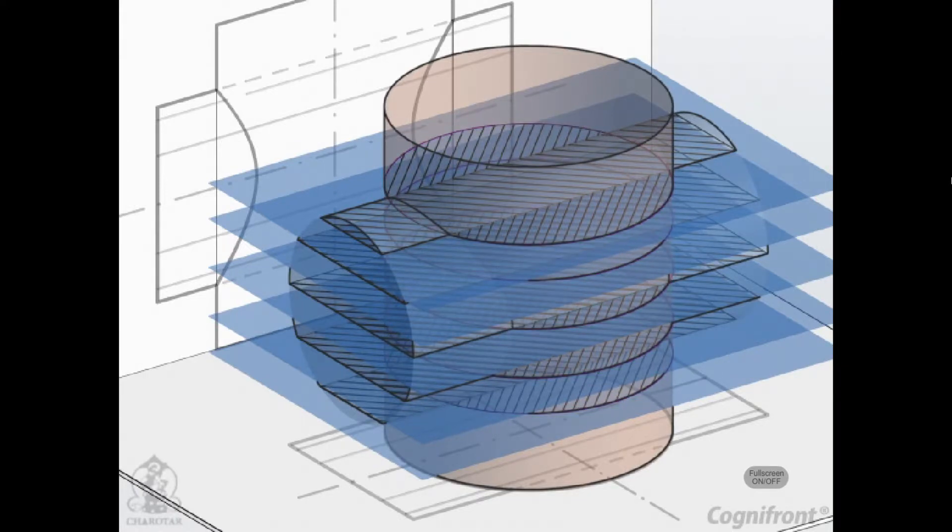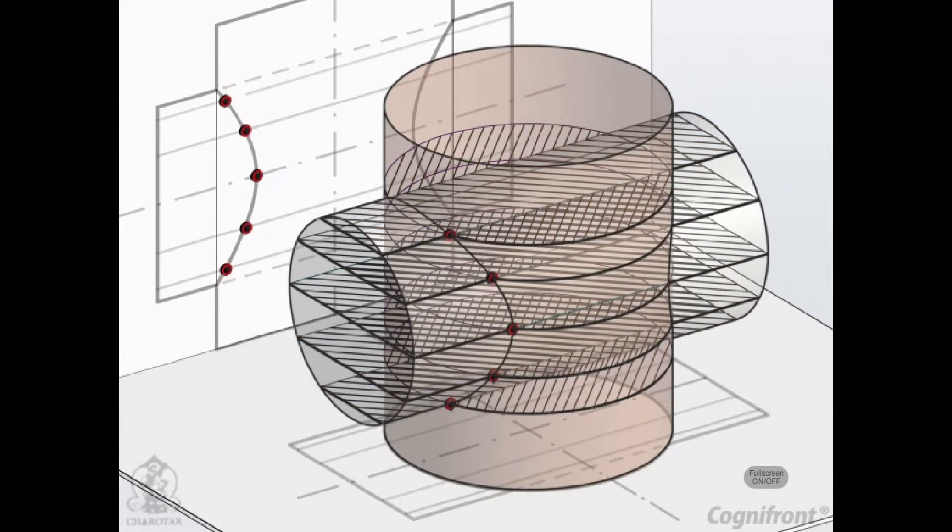Points at which sides of the rectangles intersect the circle will lie on the curve of intersection.